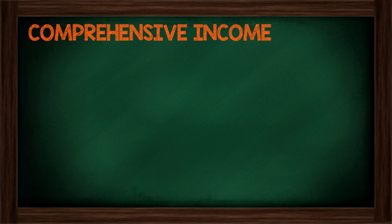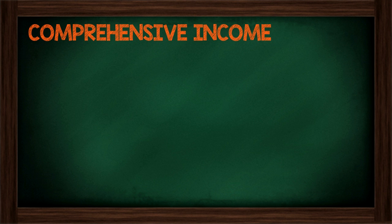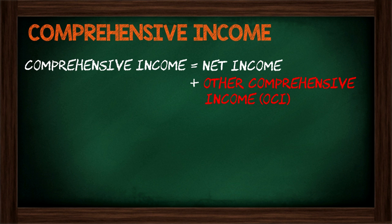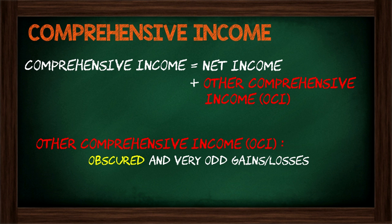Let's first look at comprehensive income. Comprehensive income equals your net income plus other comprehensive income. Other comprehensive income is a term we've never really seen before. It is the sum of all the obscure gains and losses that the business has incurred throughout the year — key word being obscure. These are weird, weird gains and losses that you would normally have never seen before.